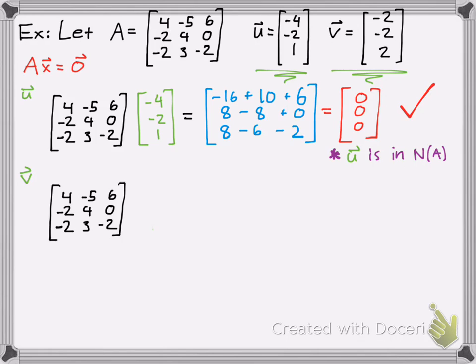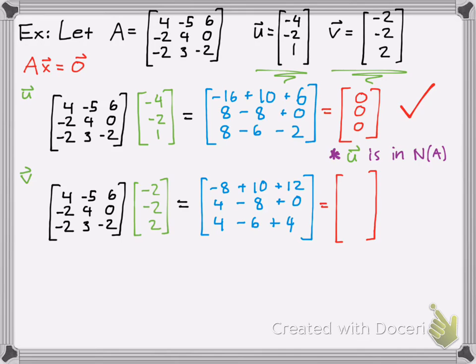Let's try V. So again, take A times V, and then see if you get 0. So let's see what we get. We get negative 8 plus 10 plus 12. We get 4 minus 8 plus 0. And then we get 4 minus 6 plus 4. Again, remember, you're doing row times column, row times column, row times column. You'll get your 3 by 3 matrix. Let's add all those up. We should get 10, negative 4, and 2.